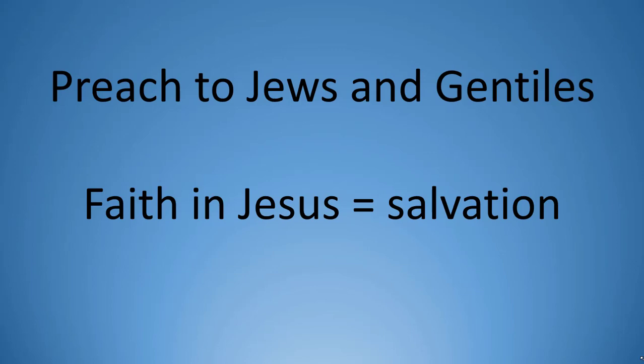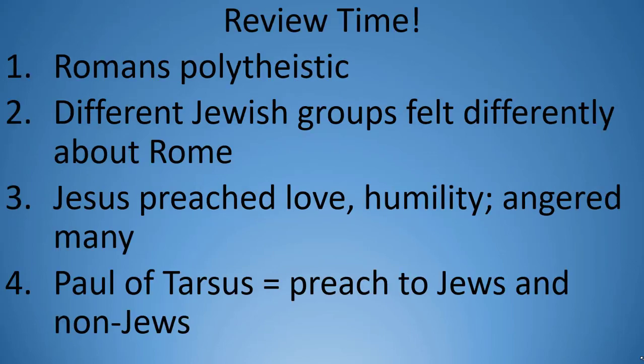Let's pause for a review. First, the Romans were a polytheistic people, worshipping their own deities, those of the ancient Greeks, along with a host of mystery cults. Second, there were four main groups of Jews in the Roman world, each with a different point of view regarding their relationship with the Roman state. Third, Jesus was a Palestinian Jew who preached love, charity, and humility, but angered many and was executed by the Romans. Finally, Paul of Tarsus played a vital role in early Christianity, as it was Paul who argued Christianity should be preached to both Jews and non-Jews.